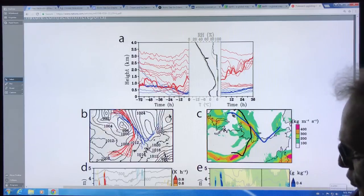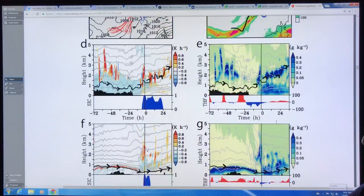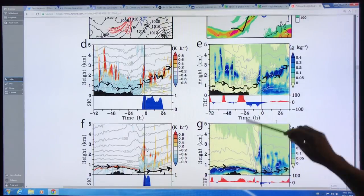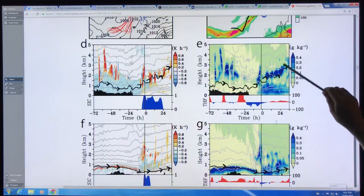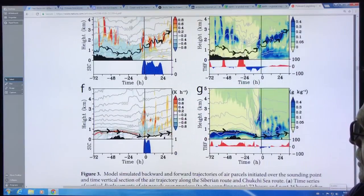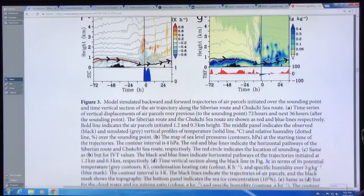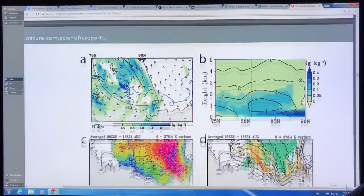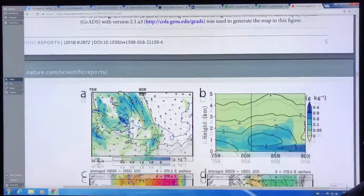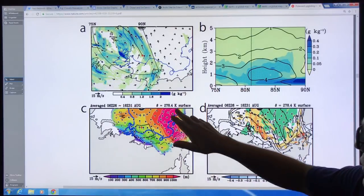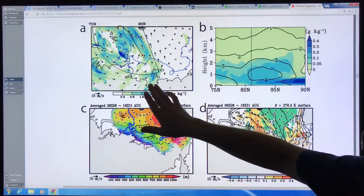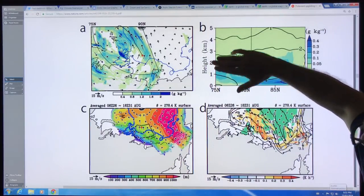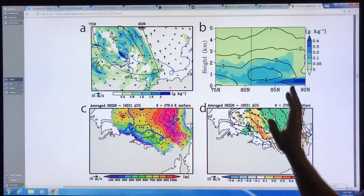This is just showing more data that they measured, heating rates and water vapor rates as a function of altitude, similar sorts of things. I'm not going to talk about the details of everything. I want to give you sort of a general picture of what's going on. Here's some more data showing grams per kilogram, this is water vapor. You can see kind of the trajectory of this atmospheric river coming into the arctic region.